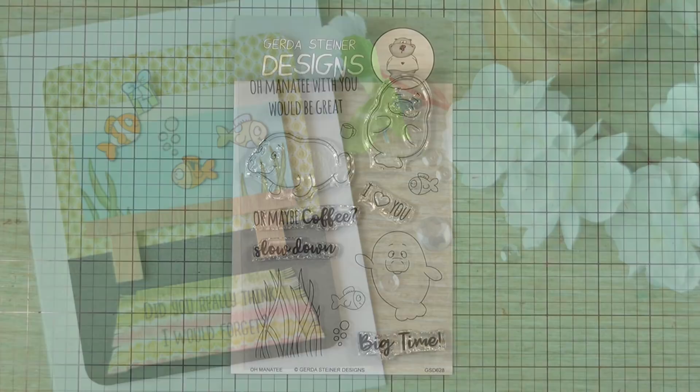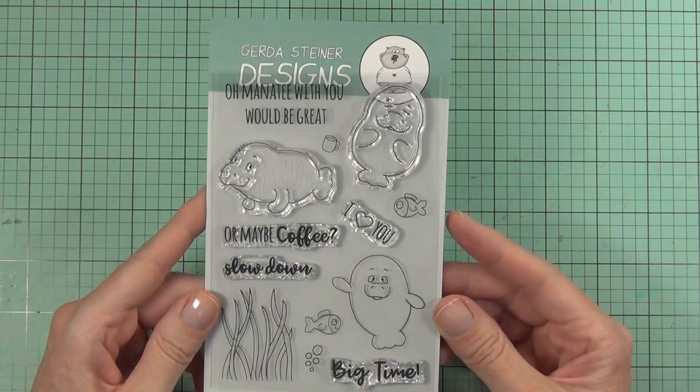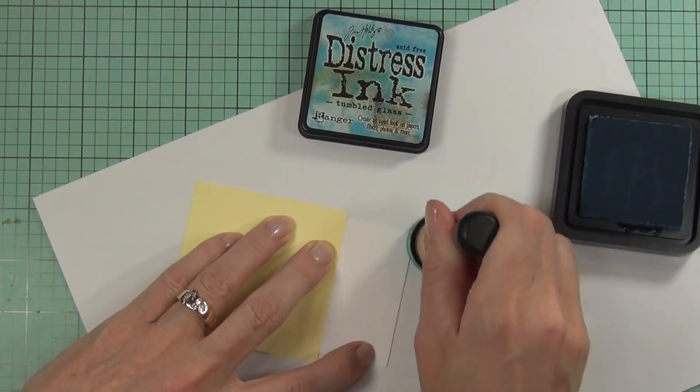Hi, it's Teresa on Listing Paper. I'm here for Gerda Steiner Designs today and we're going to be creating a scene. Now I have the O Manatee set—it's a really sweet set. She does the best critter stamps and this manatee set is heaps of fun.